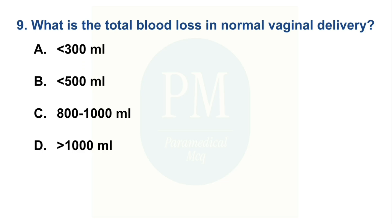What is the total blood loss in normal vaginal delivery? Option A: less than 300 ml, Option B: less than 500 ml, Option C: 800 to 1000 ml, Option D: greater than 1000 ml.